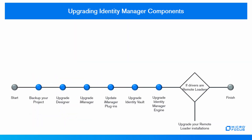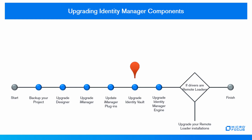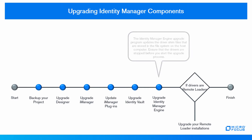These are the high-level steps to plan your upgrade: backup your project, upgrade Designer to the latest version, upgrade iManager to the latest version for Identity Manager, update the iManager plugins to match the version of iManager, and on the server running Identity Manager, upgrade Identity Vault to the latest supported version and patch. Then upgrade the Identity Manager engine.